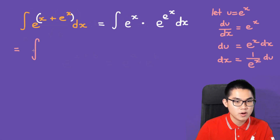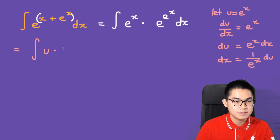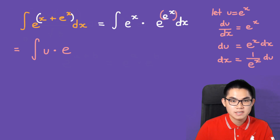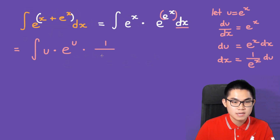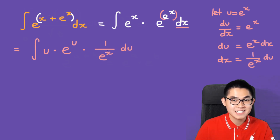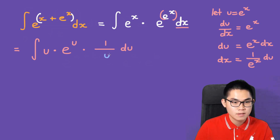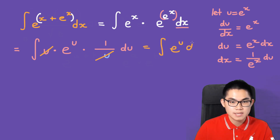Here we have the integral of e to the power of x — that's basically u — times e to the power of e to the power of x, which is also u. And dx is 1 over e to the power of x du, where e to the power of x is also u. We can cancel out the u terms, leaving us with the integral of e to the power of u du.